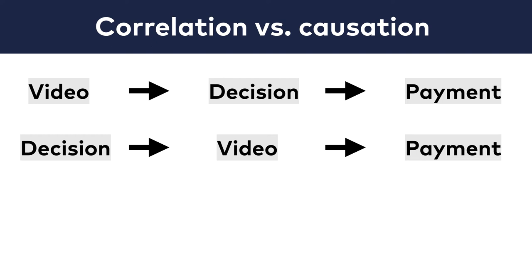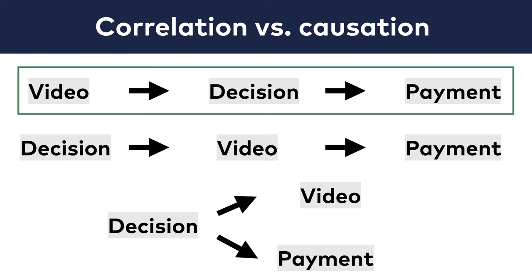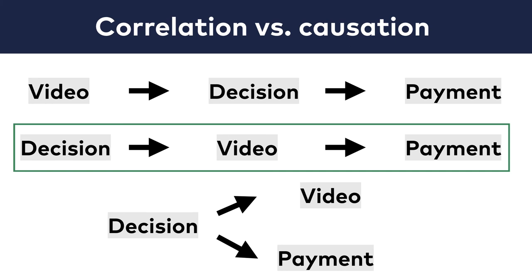The third possible scenario is maybe they made the decision already, and because of that commitment, they watched the video and bought the product independently of each other. All these scenarios are possible, even combinations of them, but only the first one would support the idea of promoting the video on the homepage. The second scenario says the video has a role, but it's not necessarily the most important element. The third shows that despite the correlation, the video does not play a significant role in the final decision of potential users.